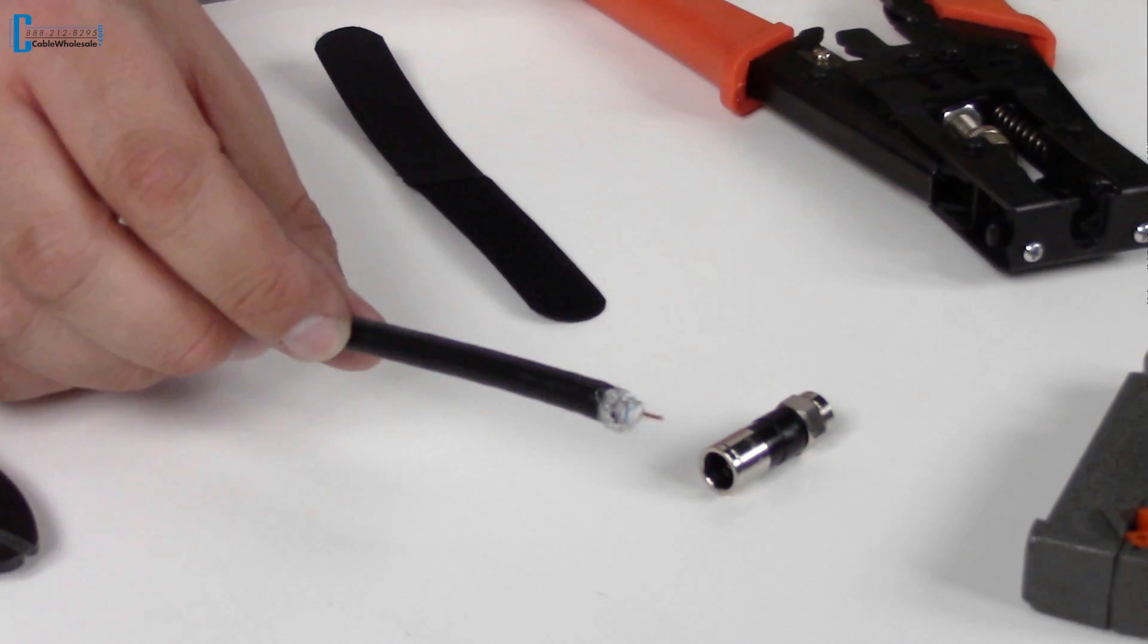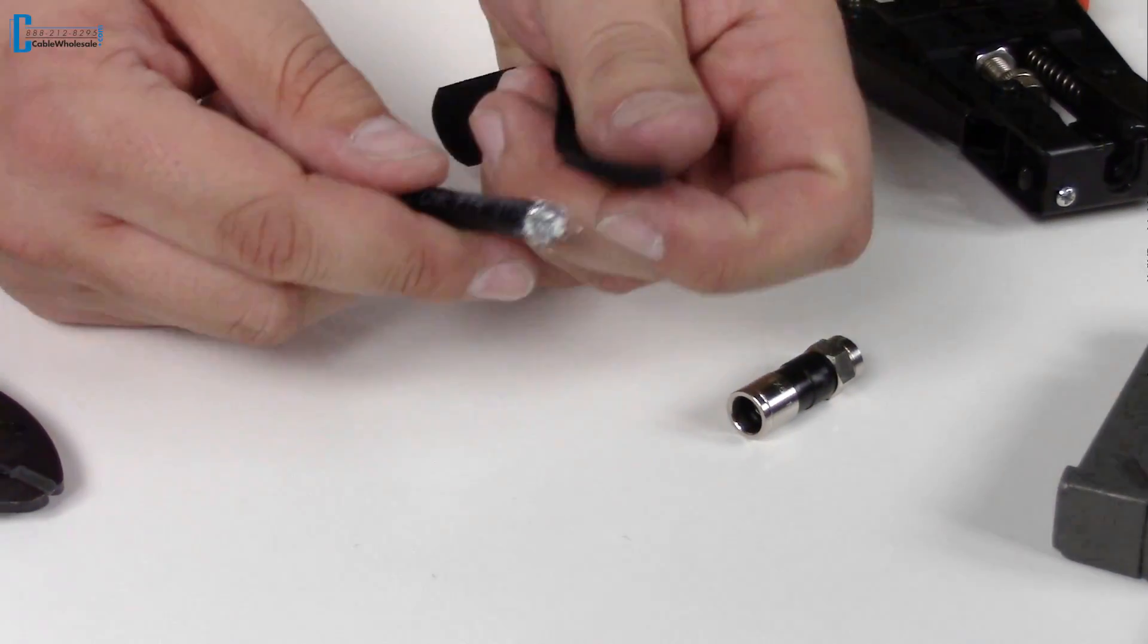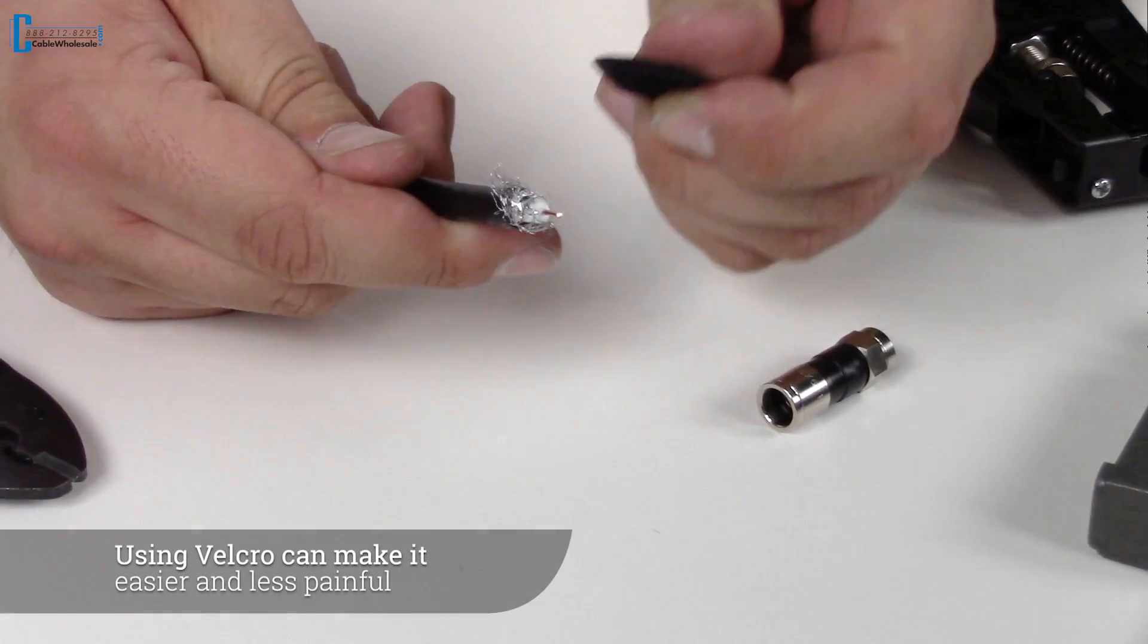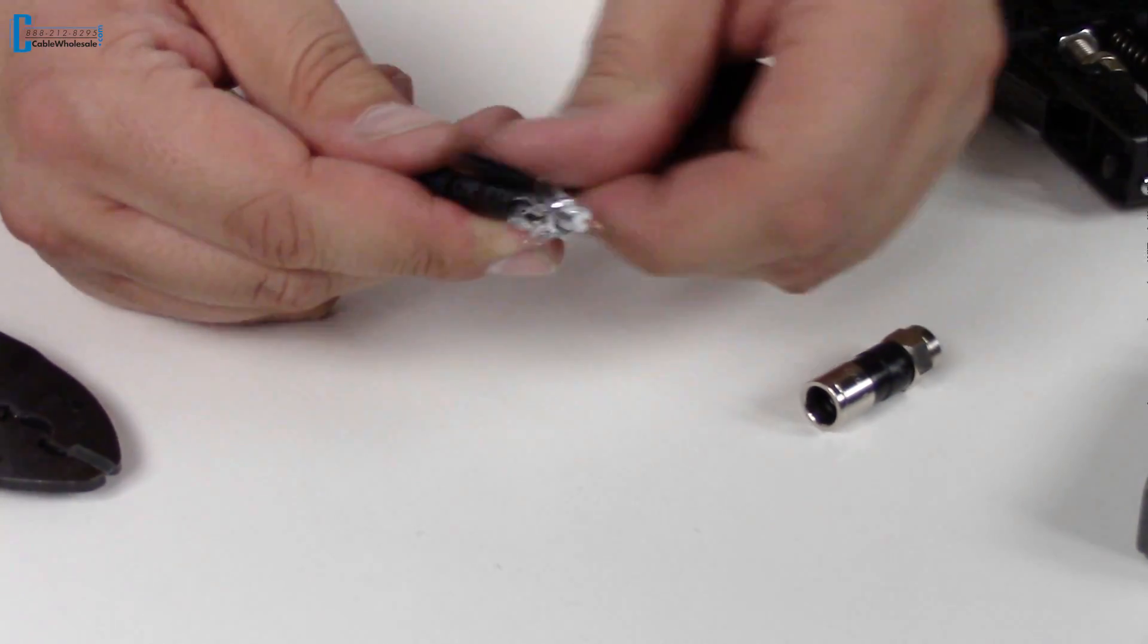First, start out with a pre-stripped piece of coax cable. We're going to take a small piece of Velcro and simply brush back the braided shield, just like that. Try to make it flat.